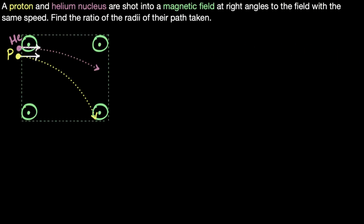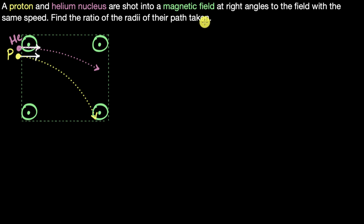Before we start applying the concepts we learned about magnetic forces to build something cool, we need to first get some practice done. Here's our first practice question: a proton and a helium nucleus are shot into a magnetic field at right angles to the field with the same speed. Find the ratio of the radii of their paths.